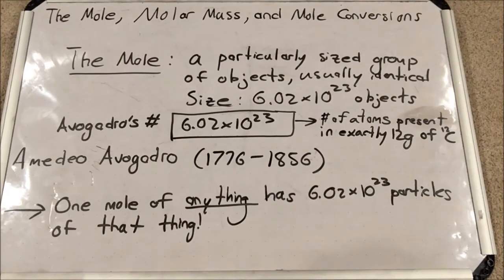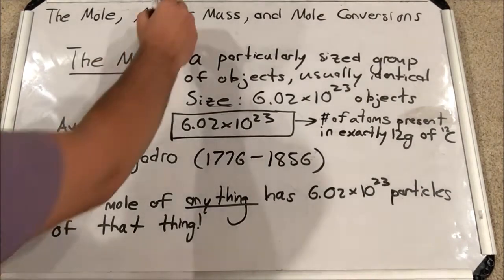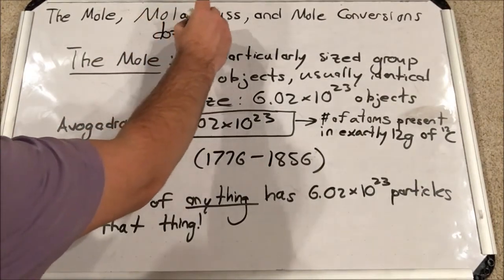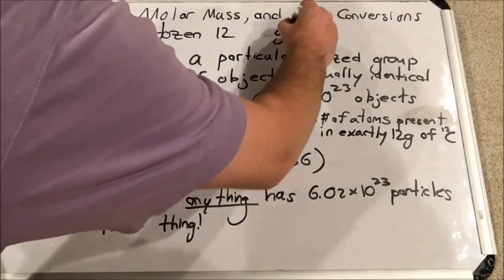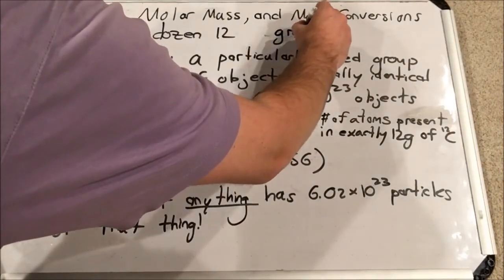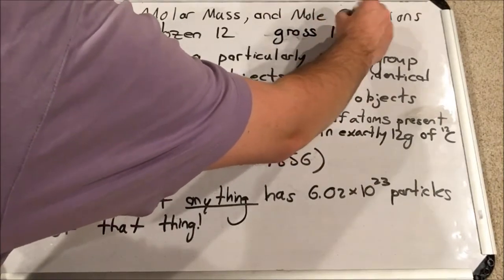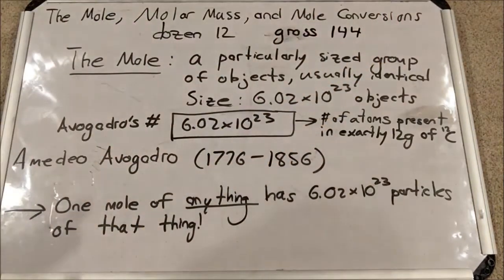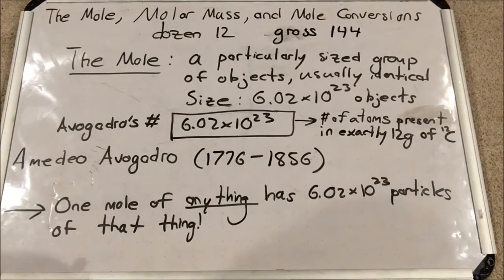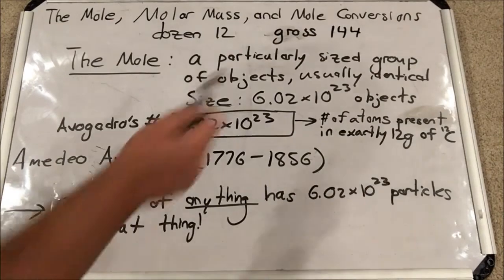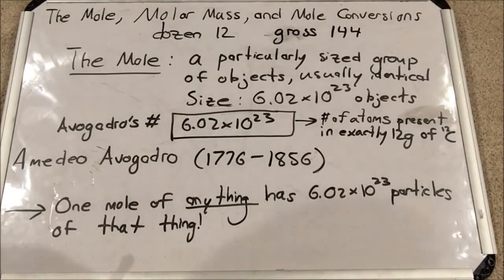Compare this to something like a dozen or a gross. A dozen has 12 objects, so a group of 12 objects is called a dozen. A gross has 144 objects — so a gross of eggs is 144 eggs, a dozen donuts is 12 donuts. Well, a mole of anything is 6.02 times 10 to the 23rd objects or examples of those things.